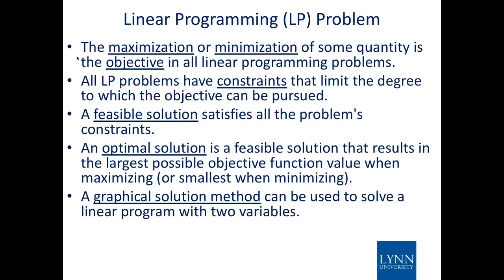You might want to minimize the time to get from Boca Raton to Orlando, but you're constrained by speed limits, road conditions, and other factors. A feasible solution satisfies all the problem's constraints but does not necessarily have to be the optimal solution. The optimal solution goes one step further — it gives you the largest possible objective function value, or smallest when minimizing.